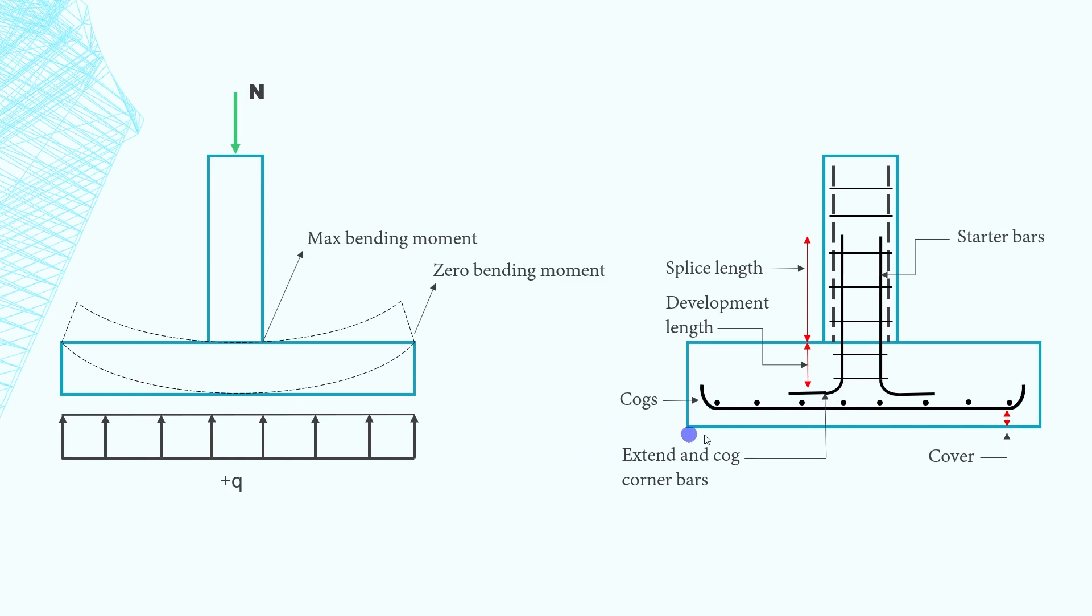Now let's have a look at the image on the right hand side. The transfer of load from the column to the footing is by a combination of end bearing of the column and the starter bars in the footing. That means the column has to sit on the footing, and you need bars sticking out of the footing to connect to the column reinforcement. These bars sticking out are called starter bars and they must extend into the footing a minimum distance equal to the development length and extend into the column a minimum lap splice length.